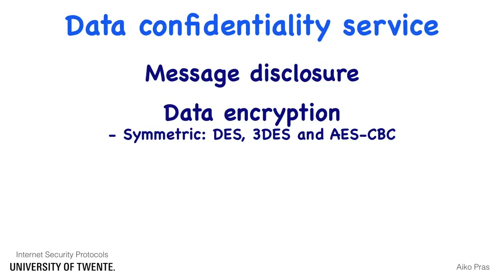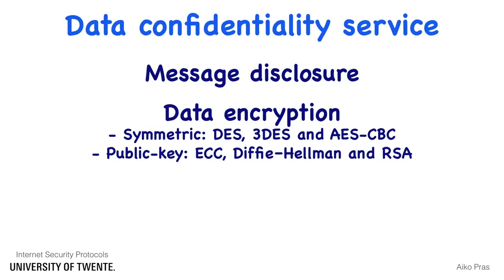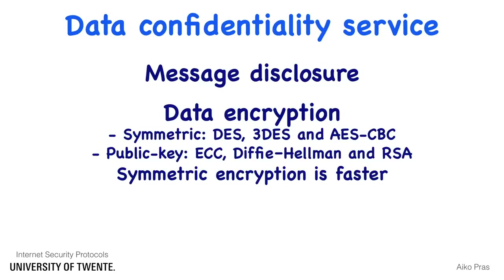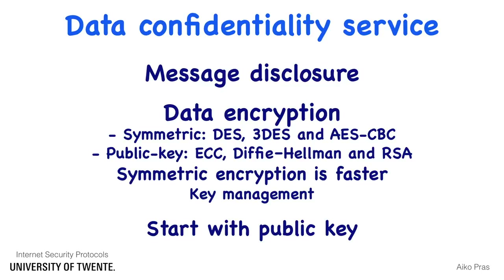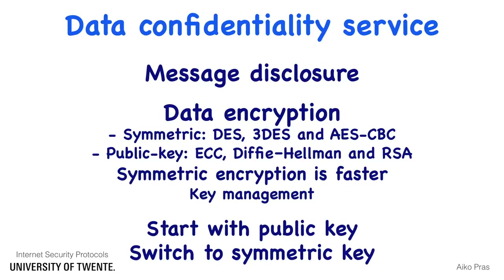The second category is public key cryptography, where two keys are needed: a public and a private. Examples of public key algorithms include ECC, Diffie-Hellman, and RSA. Symmetric encryption is much faster than public key encryption, but has as its main drawback key management. Therefore, security protocols such as IPSec, SSH, and SSL usually start with using public key encryption, but switch to symmetric key encryption as soon as a secure channel has been created.